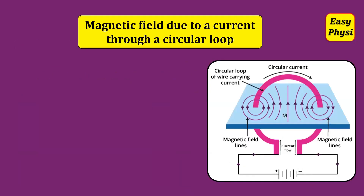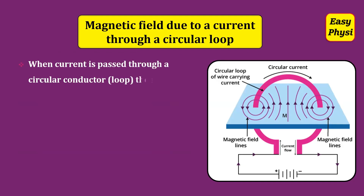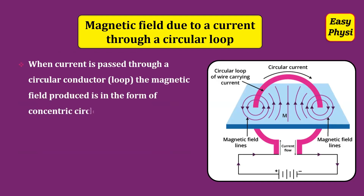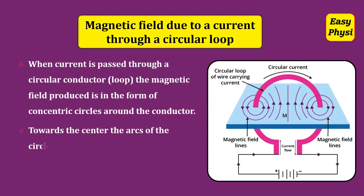Magnetic Field Due to a Current Through a Circular Loop: When current is passed through a circular loop, the magnetic field produced is in the form of concentric circles around the conductor. Towards the center, the arcs of the circles become larger and appear as straight lines.